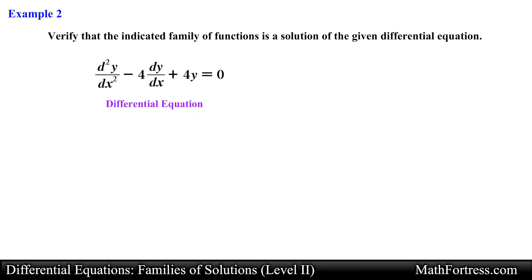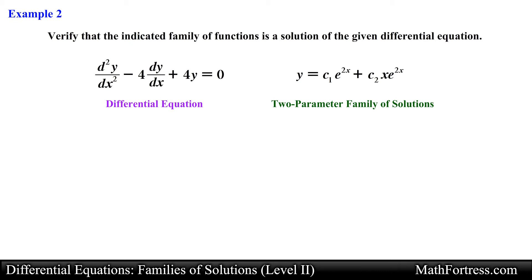Let's try the next example. The differential equation is the second derivative of y with respect to x minus 4 times the derivative of y with respect to x plus 4y equals 0. The two-parameter family of solutions to verify is y equals c sub 1 times e to the power of 2x plus c sub 2 times x times e to the power of 2x. Notice that this family of solutions contains two parameters, c sub 1 and c sub 2, making it a general solution of a second-order differential equation.